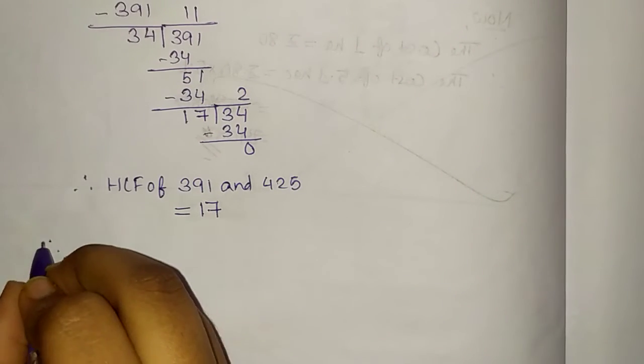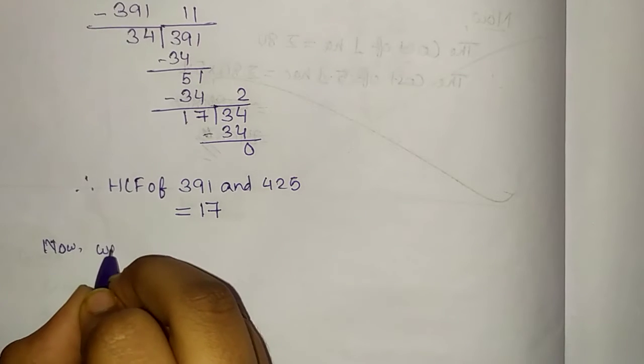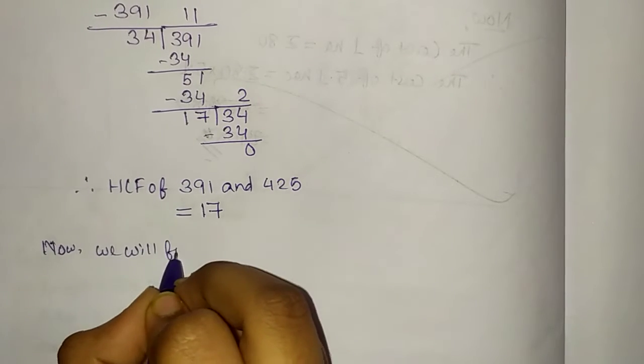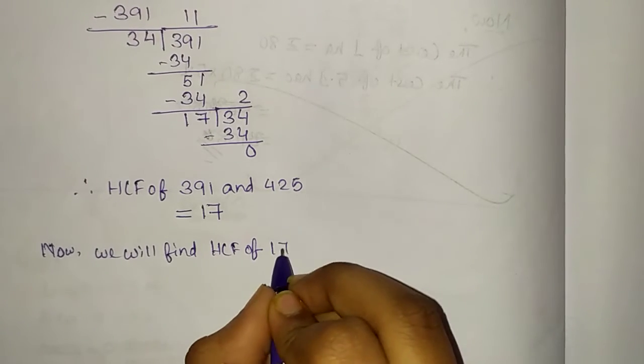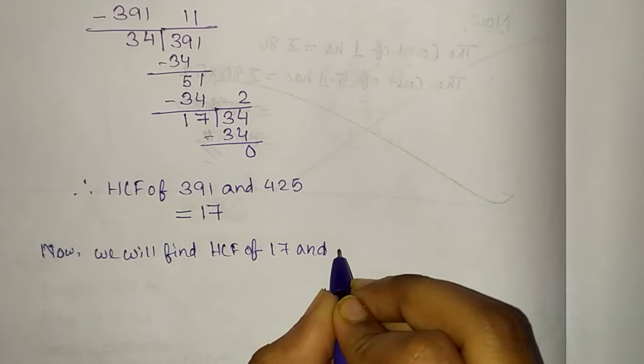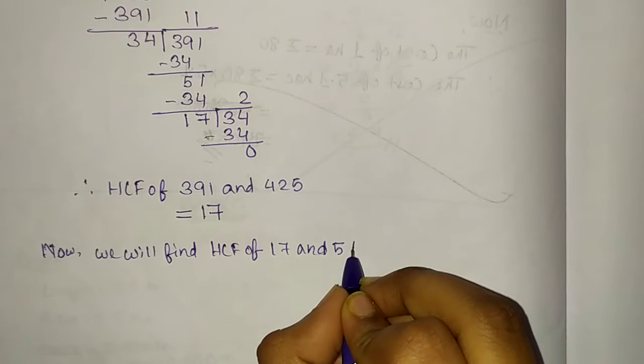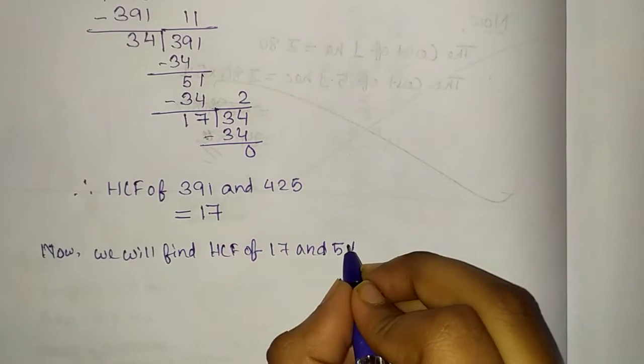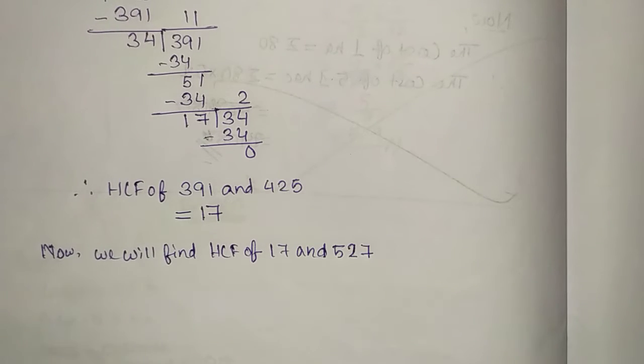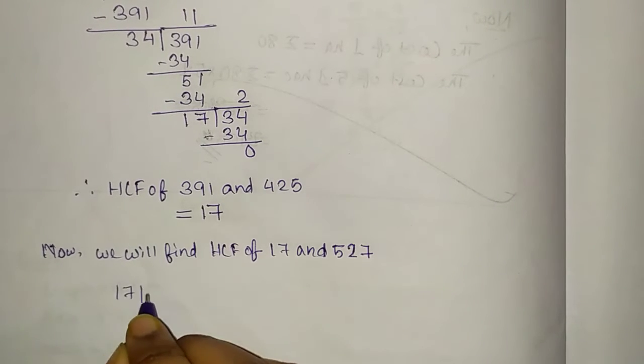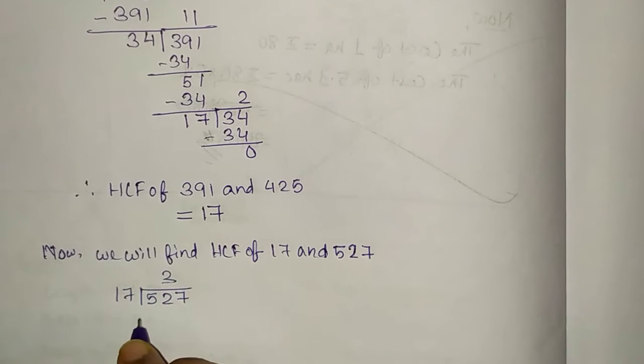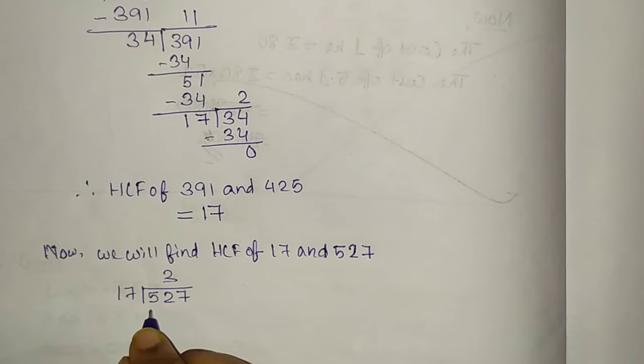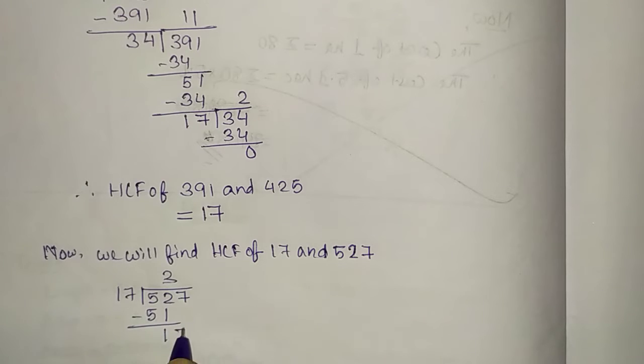Now, we will find HCF of this 17 and 527. Okay, 527. So, 17 divides 527. Now, first of all, we will get quotient 3, then 17 times 3, it will be 51 minus 51, then 1 and 17.